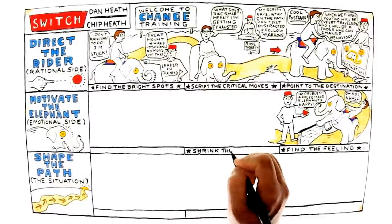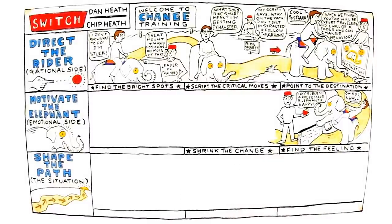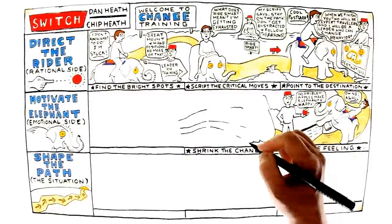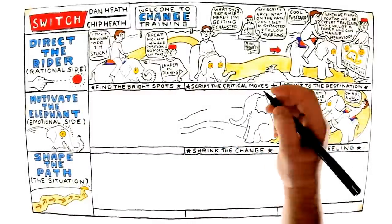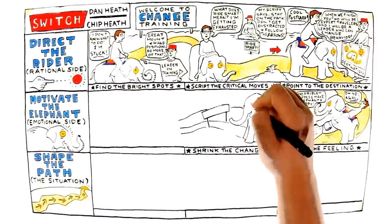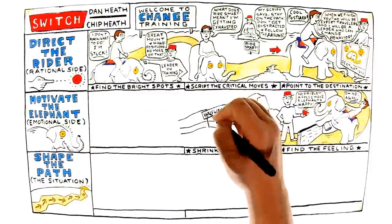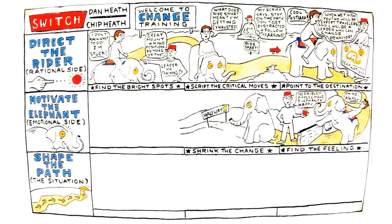Shrink the change. If you want an elephant that is not hesitant about change, you need to shrink the change. The elephant does not enjoy tasks without immediate gratification. It needs reassurance that things will not be so bad. Hope, according to the Heath Brothers, is elephant fuel.